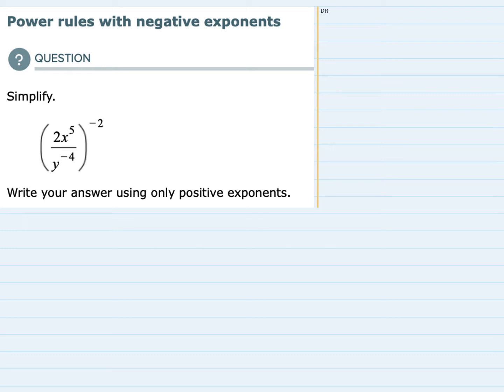Since everything is in parentheses, that means each one of these elements inside the parentheses needs to be raised to the negative 2 power. So just to rewrite this, that means the 2 coefficient out front needs to be raised to a negative 2 power. So that's 2 to the negative 2 power.